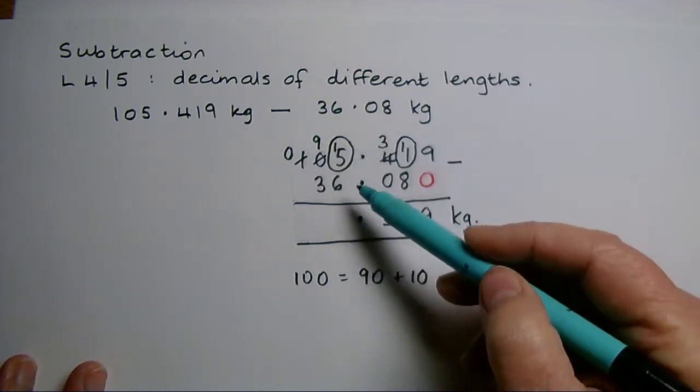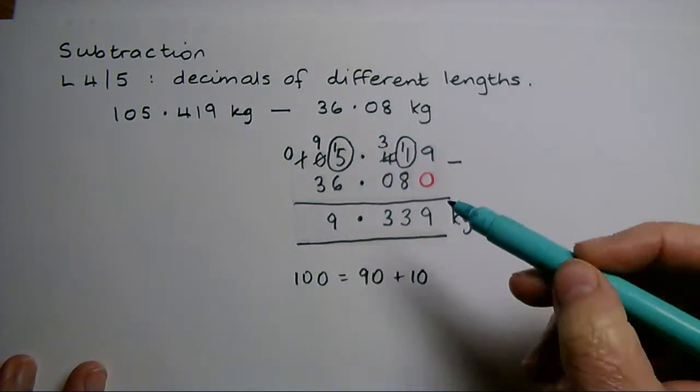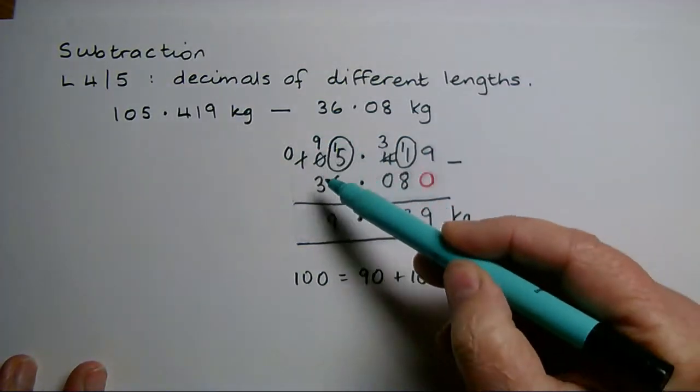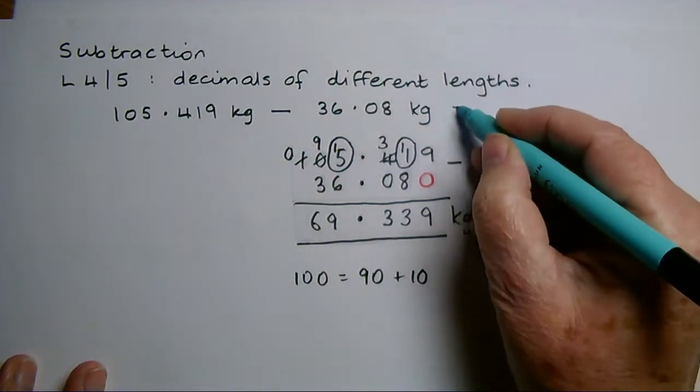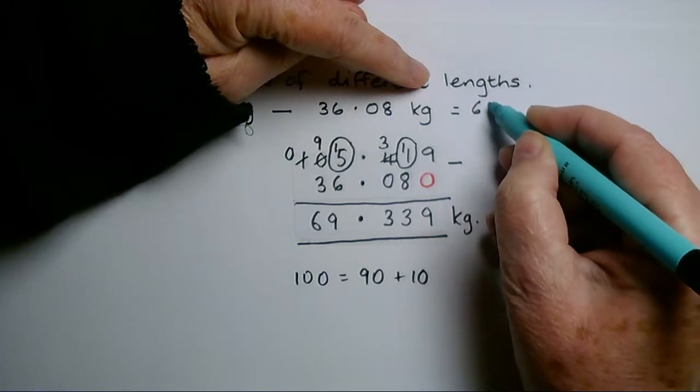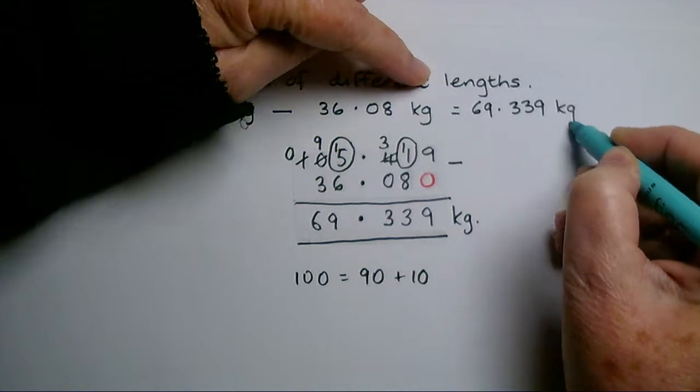I've now got fifteen units take six, leaves me with nine. And in the tens column, nine take three gives me six. So my answer will be sixty-nine point three three nine kilograms.